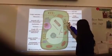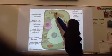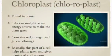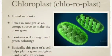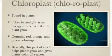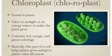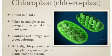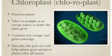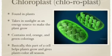These are the chloroplasts. Chloroplasts are found in plant cells. They take in sunlight as an energy source to make the plant grow. They contain red, orange, and green colorings. Basically, this part of the cell helps plants grow and gives plants color all season.